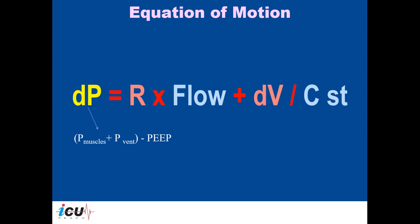In volume control mode of ventilation, the volume is fixed and the machine will use whatever pressure is required to deliver that volume, regardless of resistance, flow, and compliance. If there is any increase in resistance, increase in flow, or decrease in compliance, the pressure applied by the ventilator will be higher, because the aim of the ventilator is to deliver a fixed volume. Therefore, the dependent variable is the pressure — any change in resistance, flow, and compliance will lead to a change in the pressure applied.